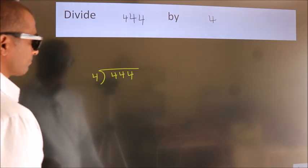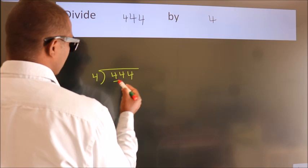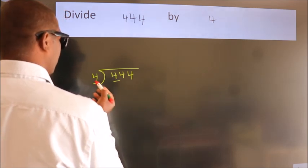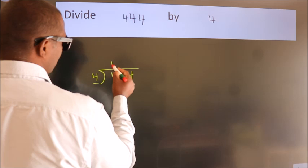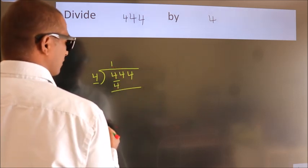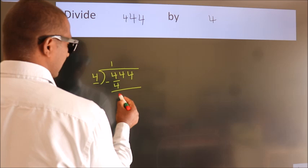Next, here we have 4, here 4. When do we get 4? In 4 table. 4 once, 4. Now, we should subtract. We get 0.